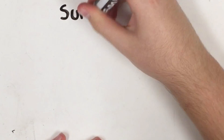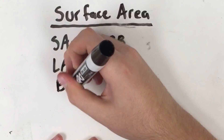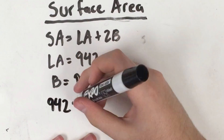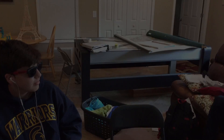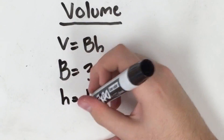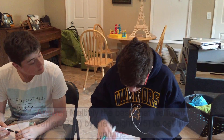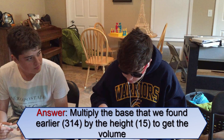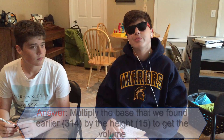Next is the surface area. Start by solving for the area of the base. Use the formula for the area of a circle, πr². Multiply the area by 2, and then add it to the lateral area to find the surface area. 1,570 feet squared is the answer! Finally, solve for the volume. Multiply the previously found area of the base by the height to find the volume. All I need to do is go back and grab the height used for the lateral area and the base used for the surface area, multiply them together, and boom — you've got the volume. That equals 4,710 feet cubed.